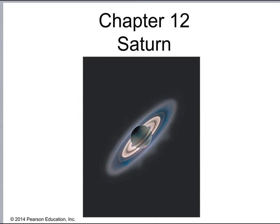We're going to begin by looking at the planet Saturn, which is of course famous for its very prominent system of rings. You can actually see Saturn's rings through a telescope — it's a very prominent feature. We're going to talk about the rings of Saturn, the planet itself, and its moons and its place in the solar system.